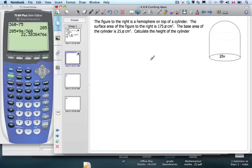The figure to the right is a hemisphere on top of a cylinder. We all know by now that a hemisphere is half a sphere, not a circle, a sphere. The surface area to the right is 175 pi centimeters squared. I'm going to write that down. So the whole surface area is that value. The base area is 25 pi. We want to find the height of the cylinder.